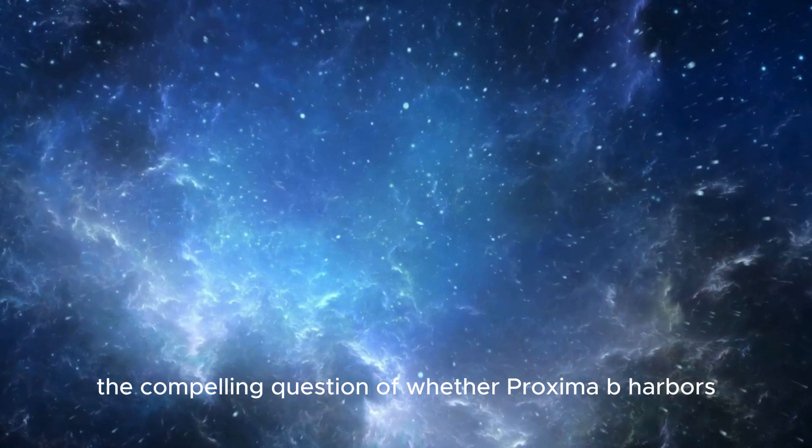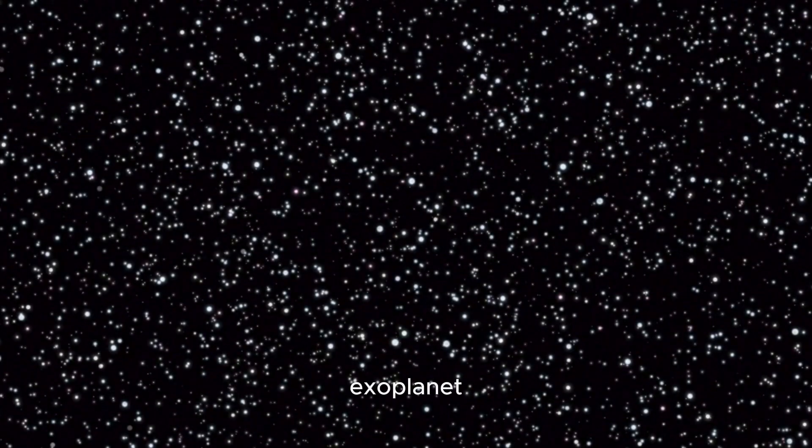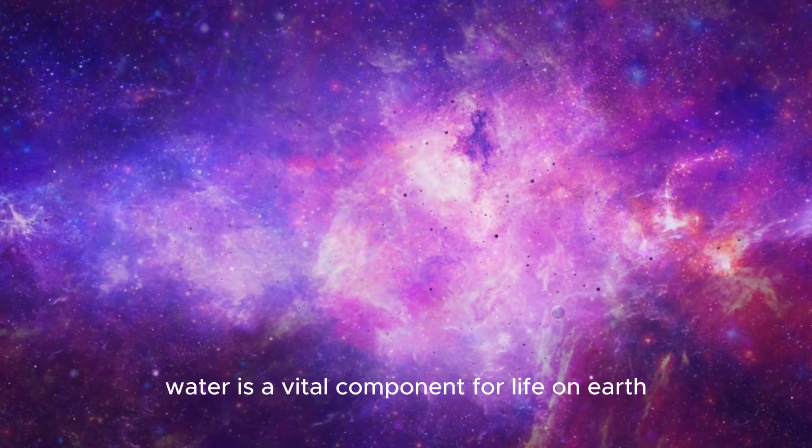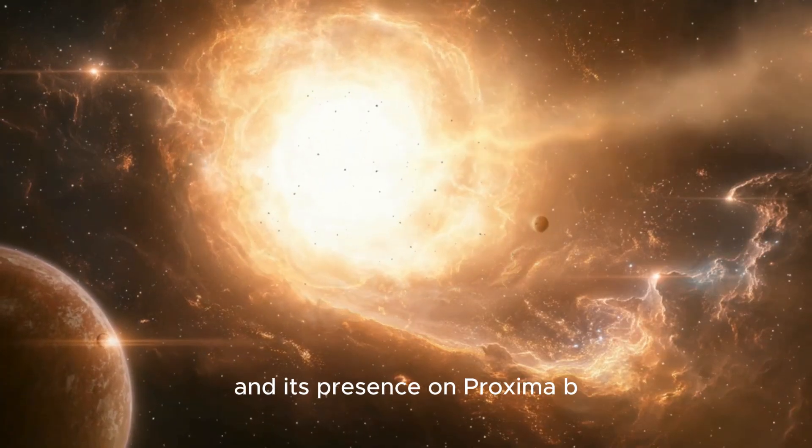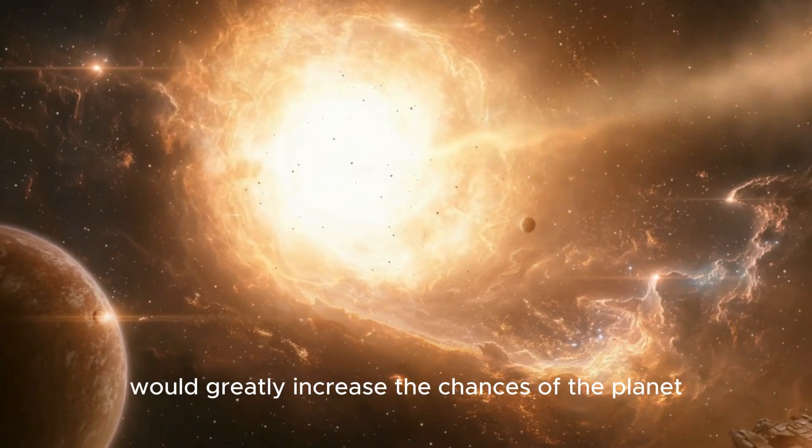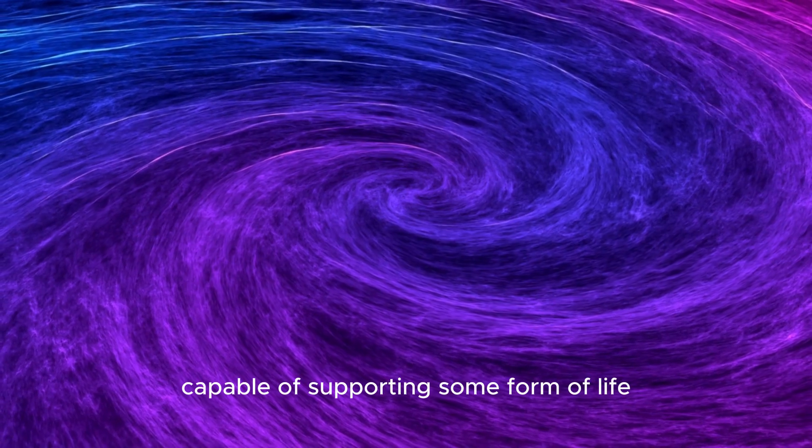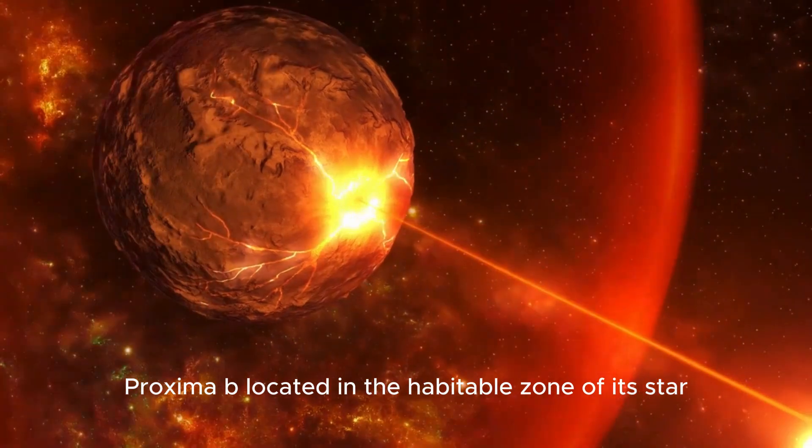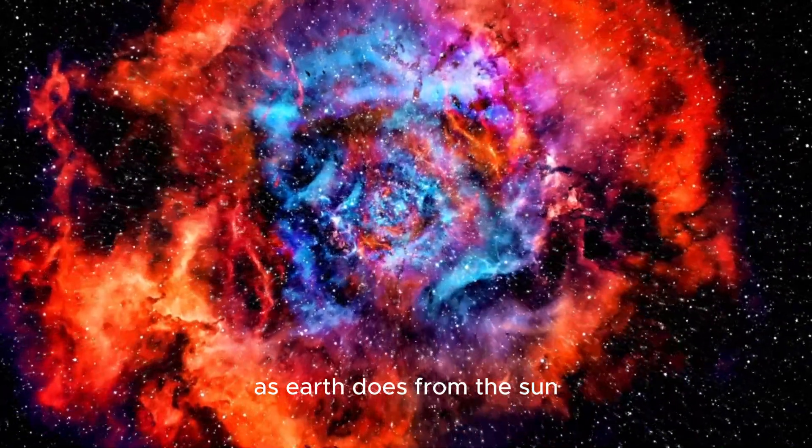The compelling question of whether Proxima b harbors water is fundamental to our understanding of this nearby exoplanet and significantly impacts the potential for life as we know it. Water is a vital component for life on Earth, and its presence on Proxima b would greatly increase the chances of the planet being habitable or, at the very least, capable of supporting some form of life. Proxima b, located in the habitable zone of its star, receives a similar amount of solar energy as Earth does from the Sun.